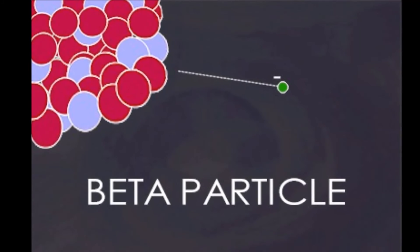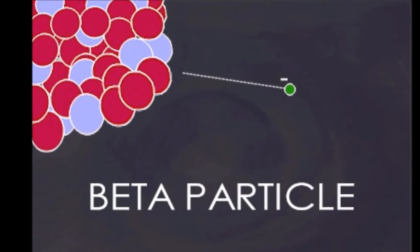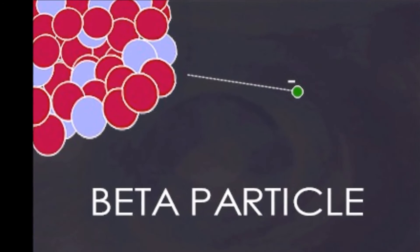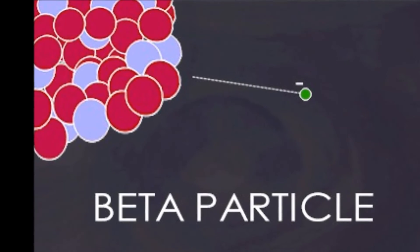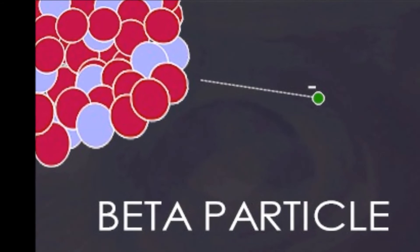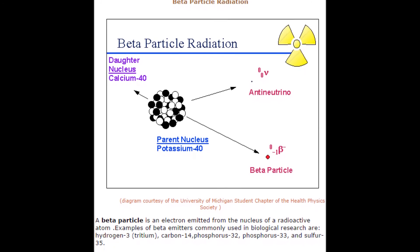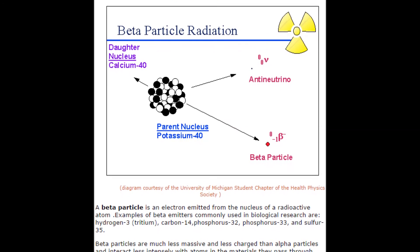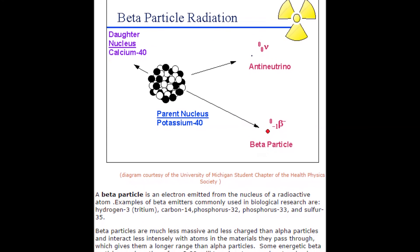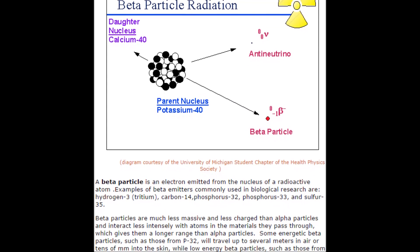Beta radiation consists of an electron being emitted from the radioactive nucleus. Beta radiation is not as weak as alpha radiation, but it's not as strong as gamma radiation, putting it in between the two types. All this information can be found in the article Radiation Properties by Princeton University.